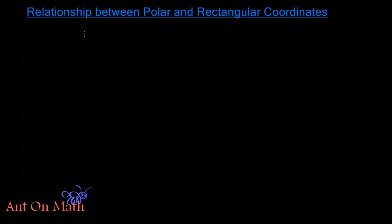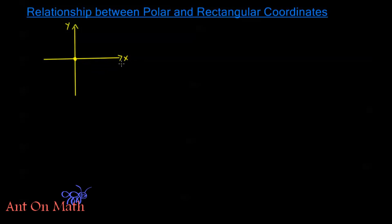First let's establish a relationship between these two systems of measurement. Let's say we have a point P, and we're going to overlay our rectangular system and our polar system. I'm going to draw the xy axes, and we're going to overlay our polar coordinate system right on top, with the x-axis acting as the polar axis. So let's say we have some point P out in space, and this point is P(x, y).